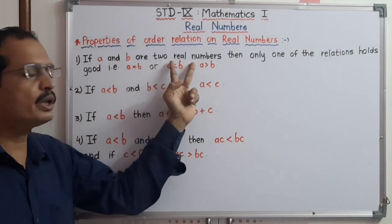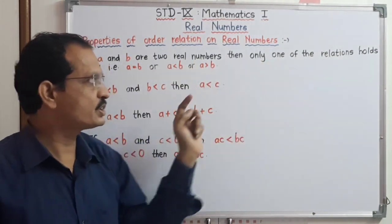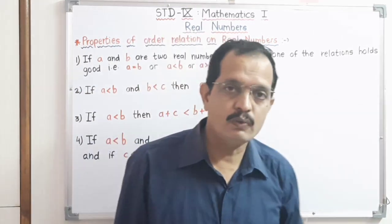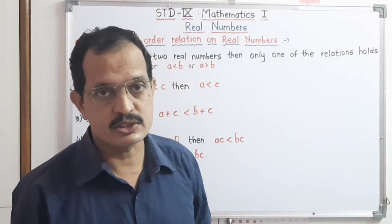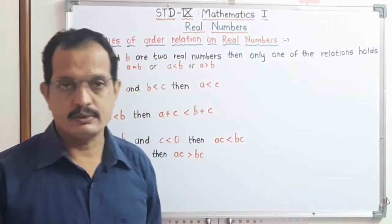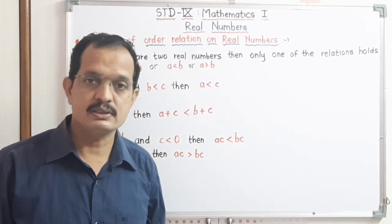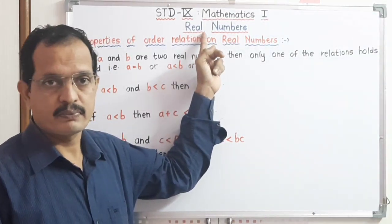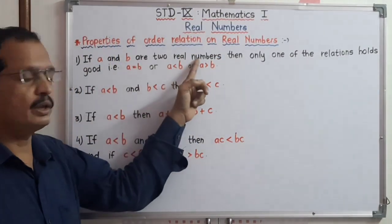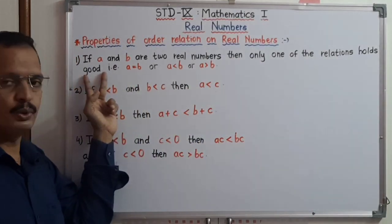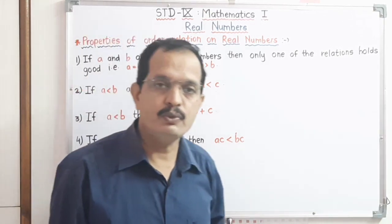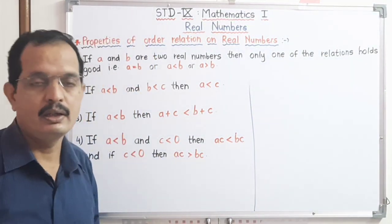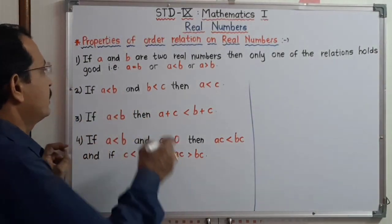First property: if A and B are two real numbers, then only one of the following relations holds good. All of you know that real numbers are the universal set for all sets of numbers — that is natural numbers, integers, whole numbers. Now, if two real numbers are given and we have to find out the order relation, meaning which is smaller and which is greater, then three conditions are possible, and out of those three, one condition applies: the two numbers may be equal, A may be less than B, or A may be greater than B.